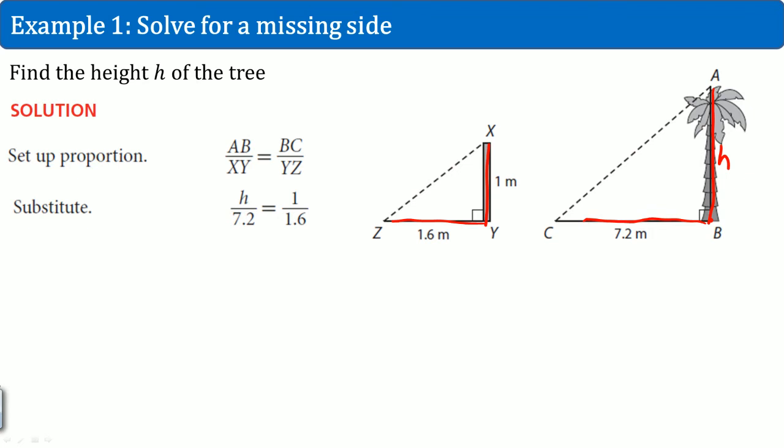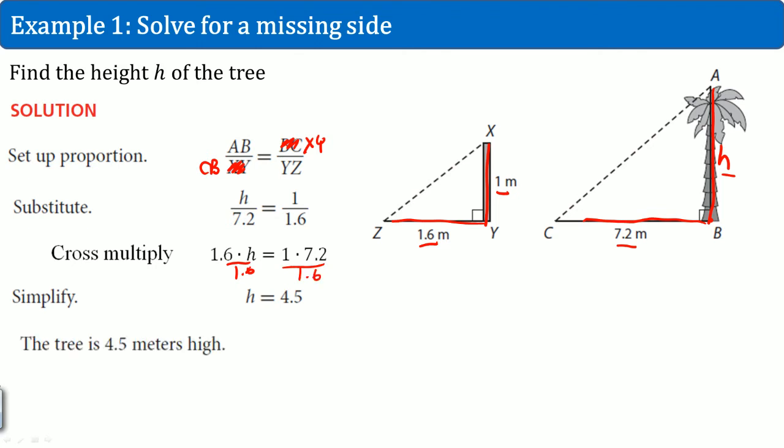Except the proportion is, hold on, AB over, this is wrong. This should be CB, because this is 1 over, so this is XY over ZY. Yeah. So, it went H over 7.2 is equal to 1 divided by 1.6. Cross multiply, then divide both sides by 1.6. You get H is equal to 4.5. So, the height of the tree is 4.5 meters.